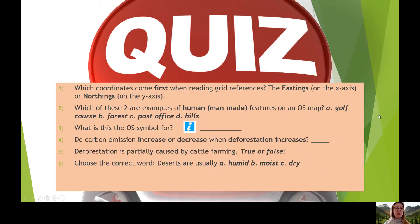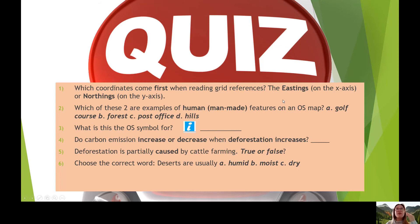Let's start off with a quiz. Please get a pen and paper and write down your answers, pausing after each question. Question number one: which coordinates come first when reading grid references? It doesn't matter whether we're reading four-figure or six-figure grid references — one of these always comes first. Is it the Eastings or the Northings?